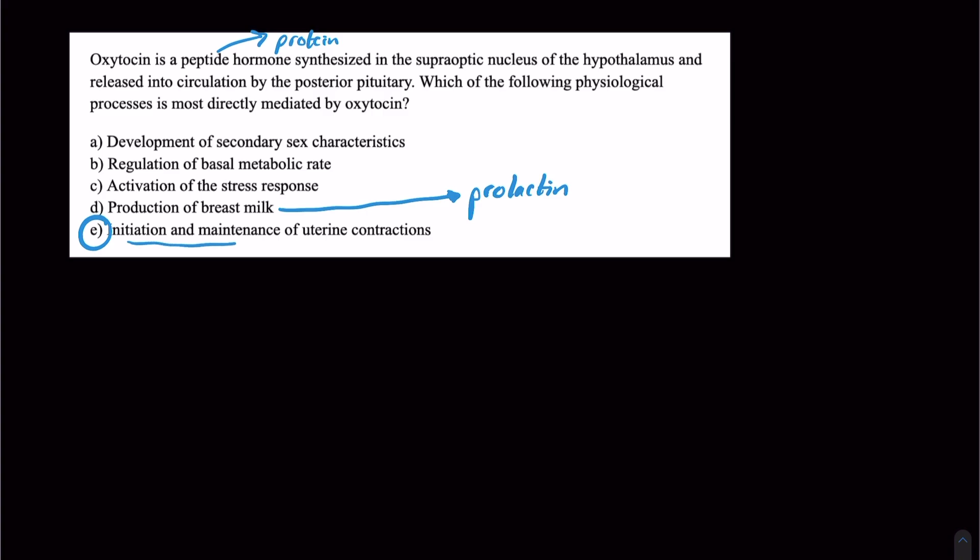So initiation and maintenance of uterine contractions, it's that positive feedback cycle. It's going to be the most likely thing they test you on for oxytocin on test day. Now, activation of the stress response, that's also going to be another anterior pituitary hormone. Cortisol is primarily going to be involved with that. Again, regulated in the anterior pituitary by ACTH, which is regulated by CRH in the hypothalamus.